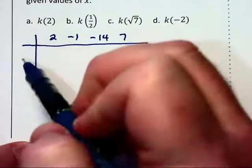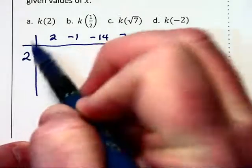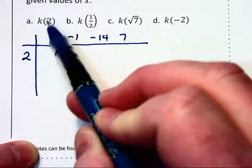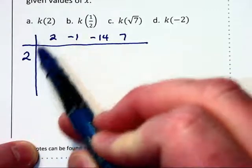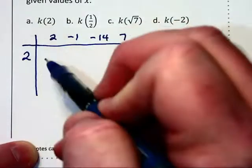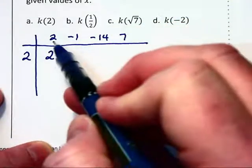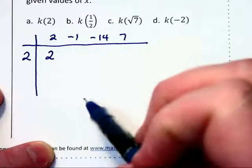And let's begin by evaluating k of 2. First notice I've not changed this from 2 to a negative 2. When we're evaluating the function for 2, we actually put 2 down there. Now we bring down our first coefficient, 2. And we're missing this middle row in here, but we're going to do that part in our head.